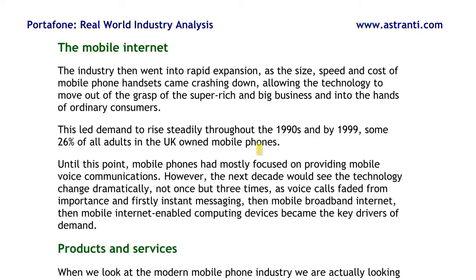Starting in 1999, 26% of all adults in the UK owned mobile phones, and they were using them for voice communications. As speed and bandwidth over mobile connections got better, voice calls faded from importance. We then saw firstly instant messaging by SMS, then mobile broadband internet, and then mobile internet-enabled computing become the key drivers of demand in the industry — setting the scene for the creation of the smartphone in 2007.